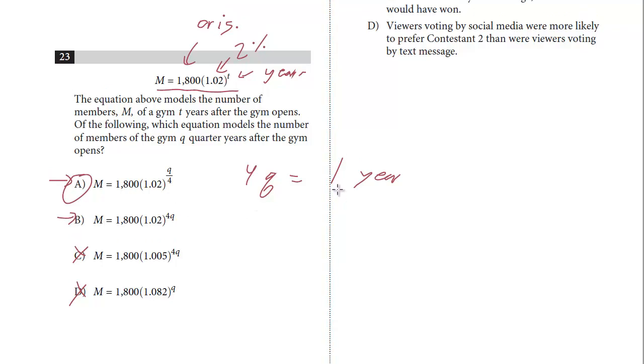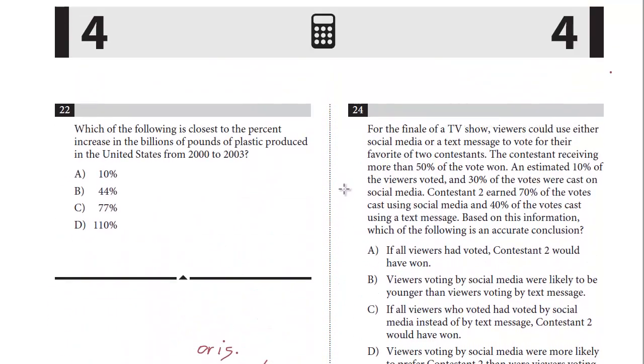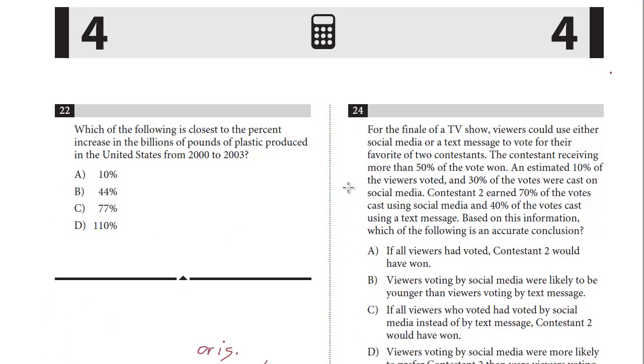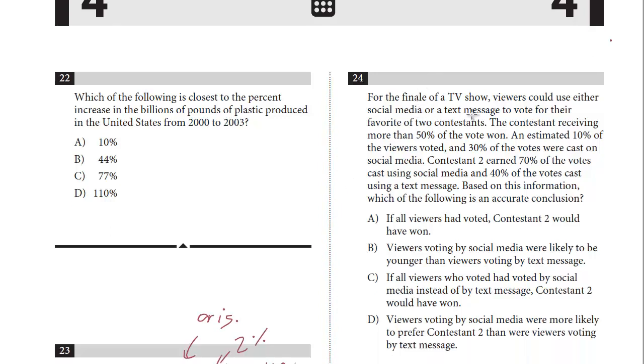Let's take a look at question number 24. For the finale of a TV show, viewers could use either social media or text message to vote for their favorite of two contestants. The contestant receiving more than 50 percent of the vote won. An estimated 10 percent of viewers voted, and 30 percent of the votes were cast on social media. Contestant two earned 70 percent of the votes cast using social media and 40 percent of the votes cast using text message. Based on this information, which of the following is an accurate conclusion?